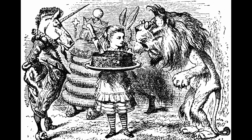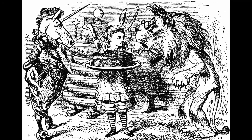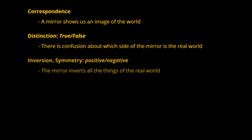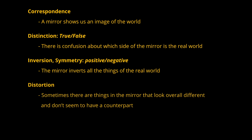Let's summarize the functions of the mirror according to Lewis Carroll. A mirror shows us an image of the world. There is confusion about which side of the mirror is the real world. The mirror inverts all the things of the real world. But sometimes there are things in the mirror that look overall different and don't seem to have any counterpart. And there are only two sides of the mirror.